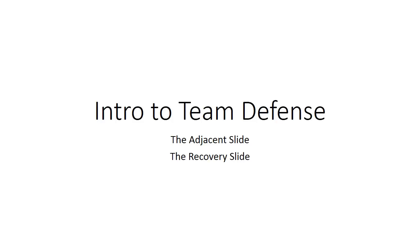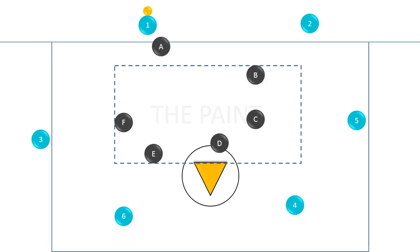Finally, we have the recovery slide. If you noticed, when D slid over to offensive player six, offensive player four was left wide open. Well, in order to stop that, we have to have A drop back and cover that man.